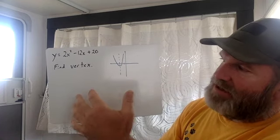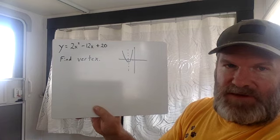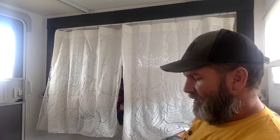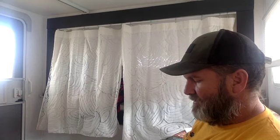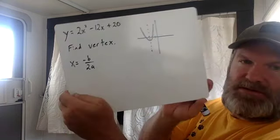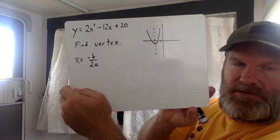To find the vertex, you find the x coordinate first, and you find it the same way that you found the axis of symmetry, which is x equals negative b over 2a. That was the formula that you used on Monday.